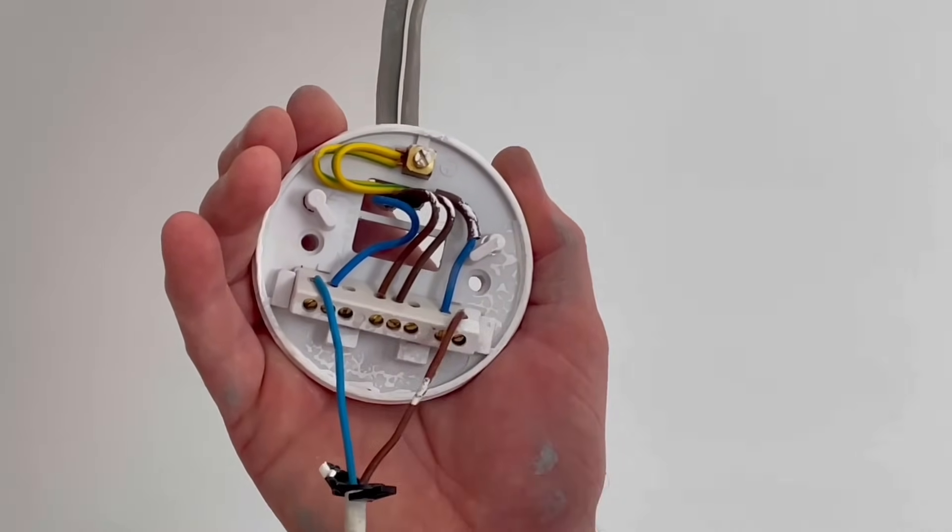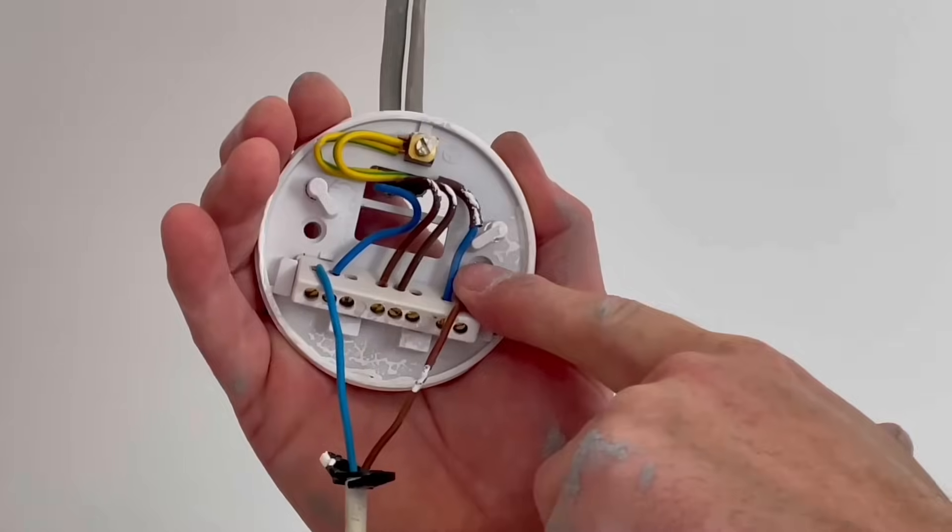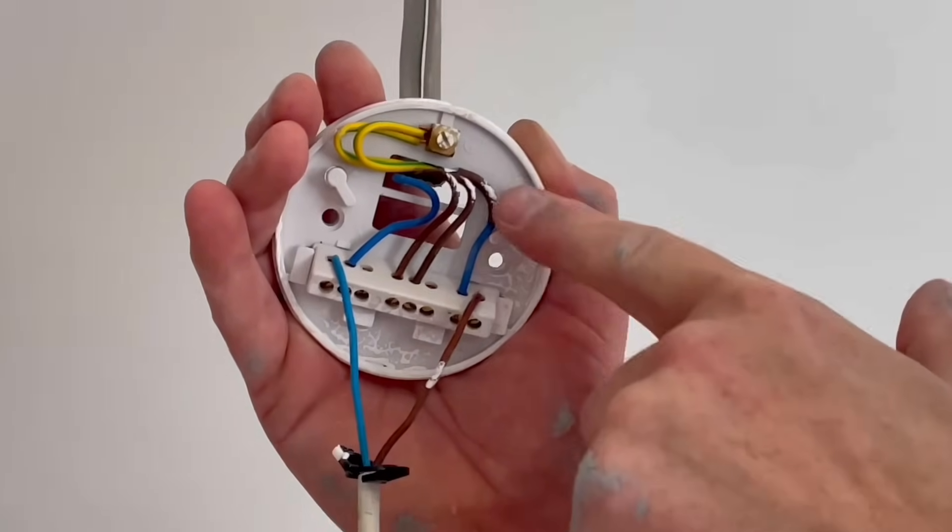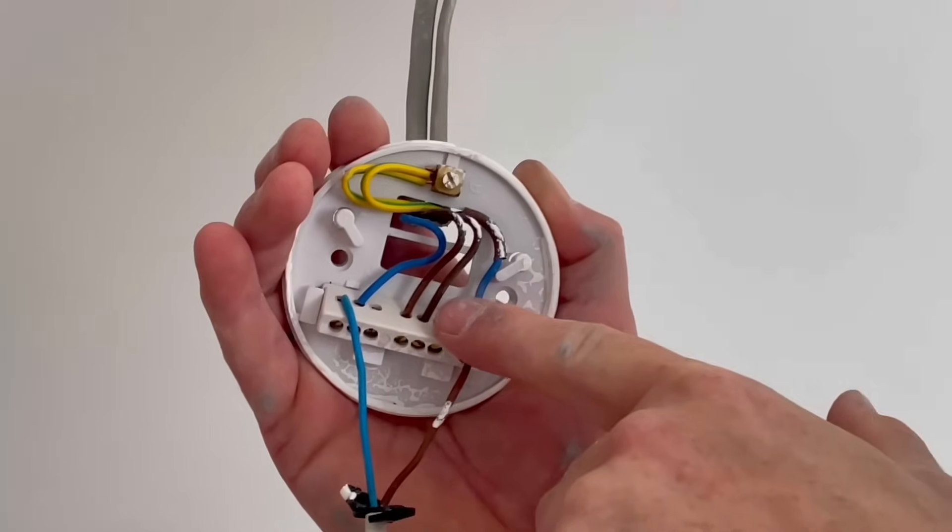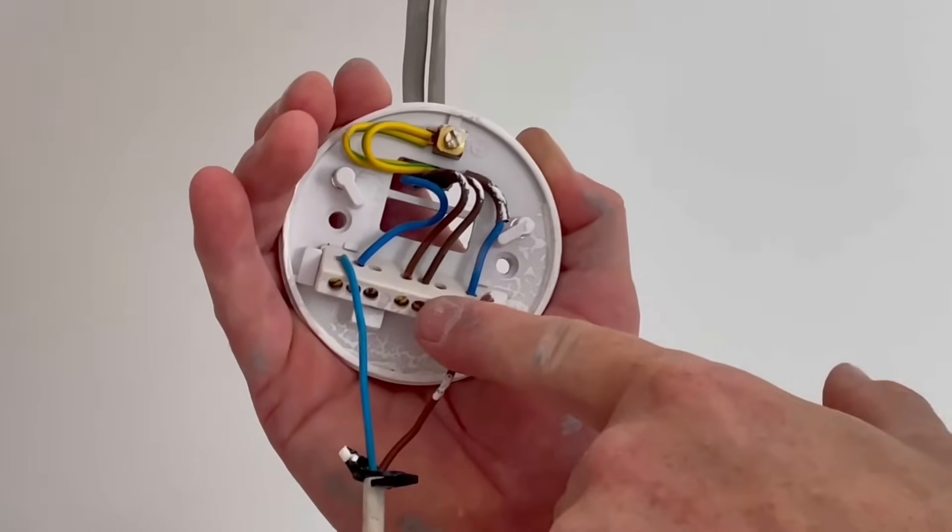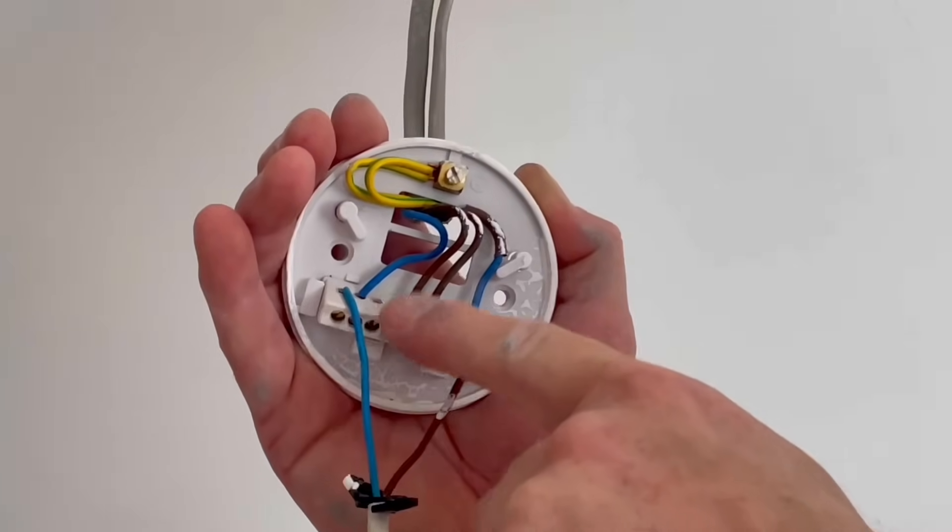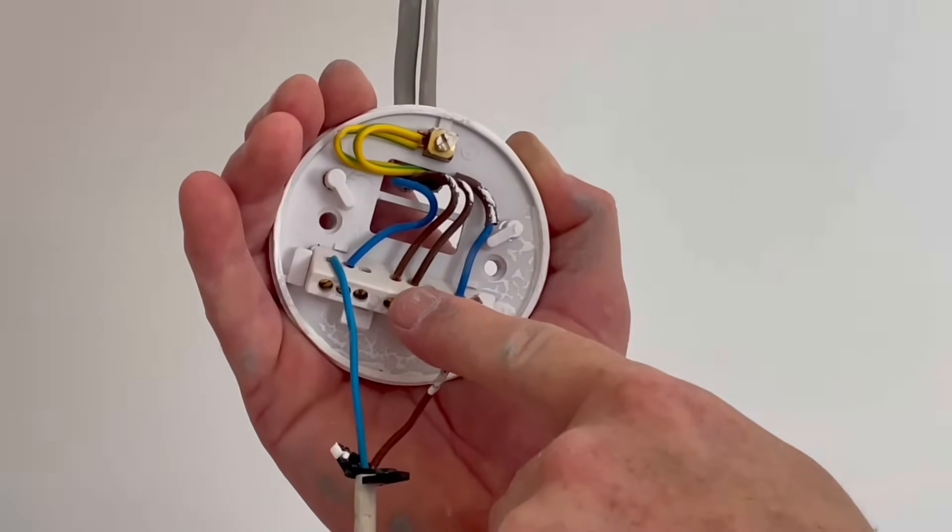This side here we've got the brown conductor coming down to our pendant with a blue conductor next to it but note it's got some brown sleeving so that is actually not a neutral, it's a switching line conductor. It comes in with a permanent line conductor which is in loop and a CPC. We've also got the permanent line, neutral and CPC which brings our power supply in.